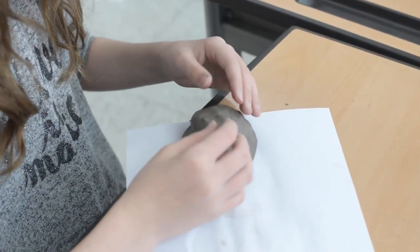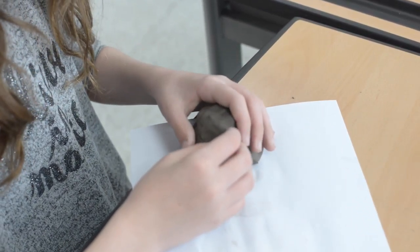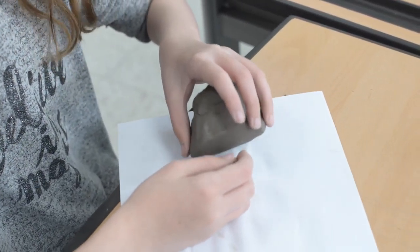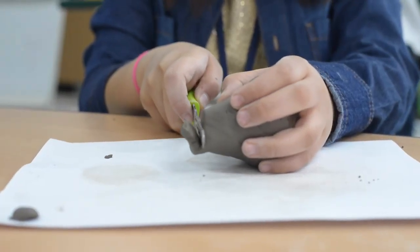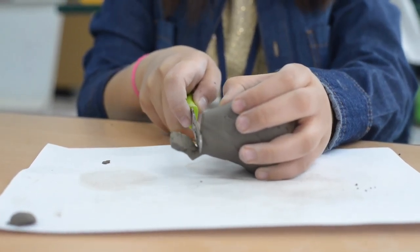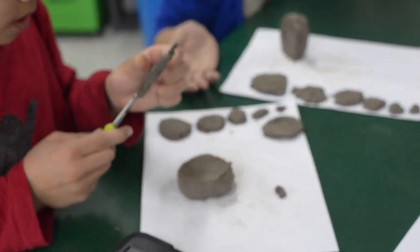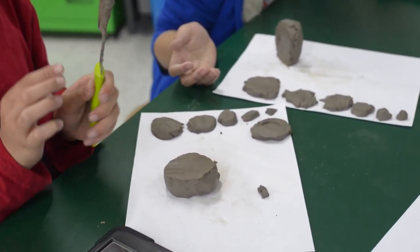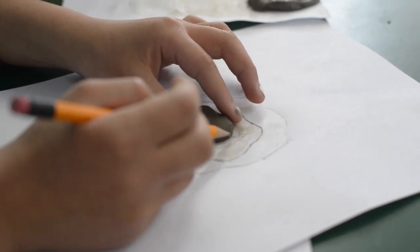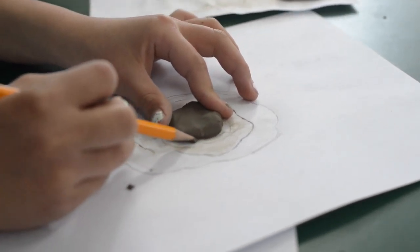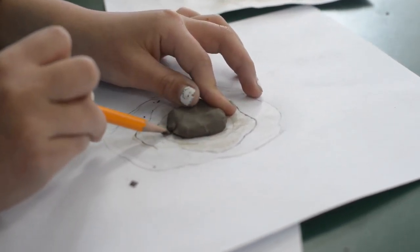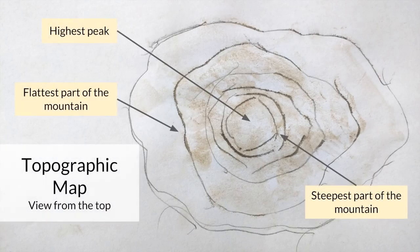To teach this concept, we had students create their own mountainous landforms out of clay and slice them into layers, with thinner slices for the steeper parts of their clay mountain. They then traced each slice onto a piece of paper and labeled the highest peak, the flattest part, and the steepest part of their clay mountain.